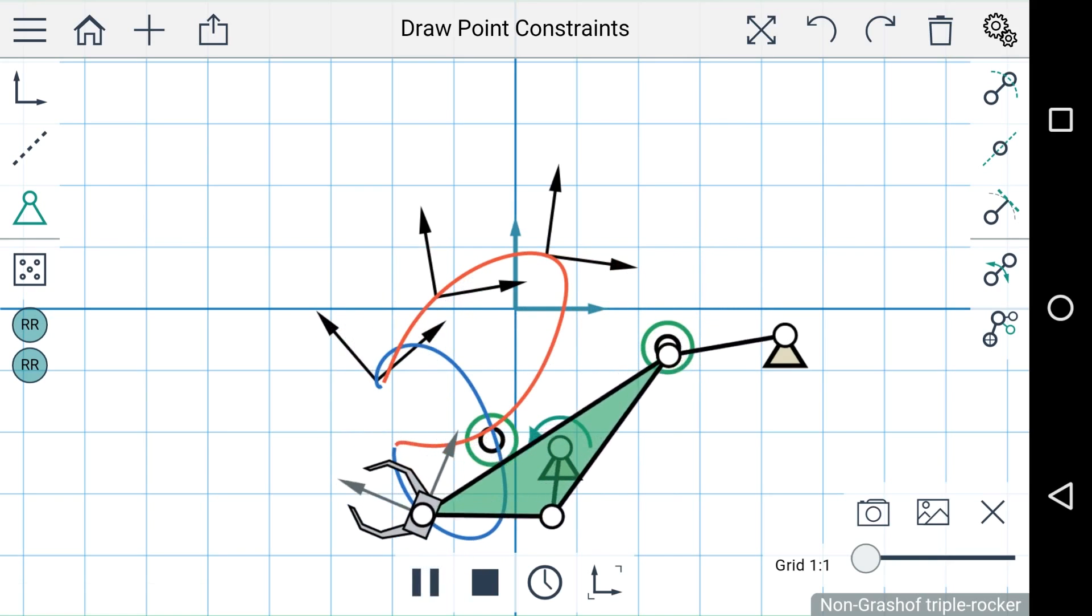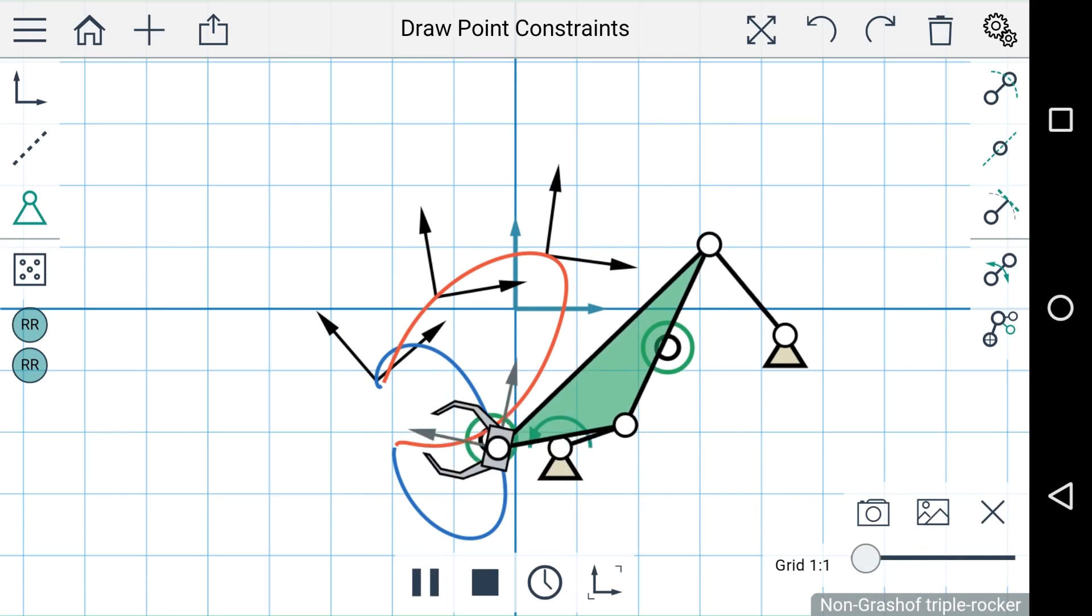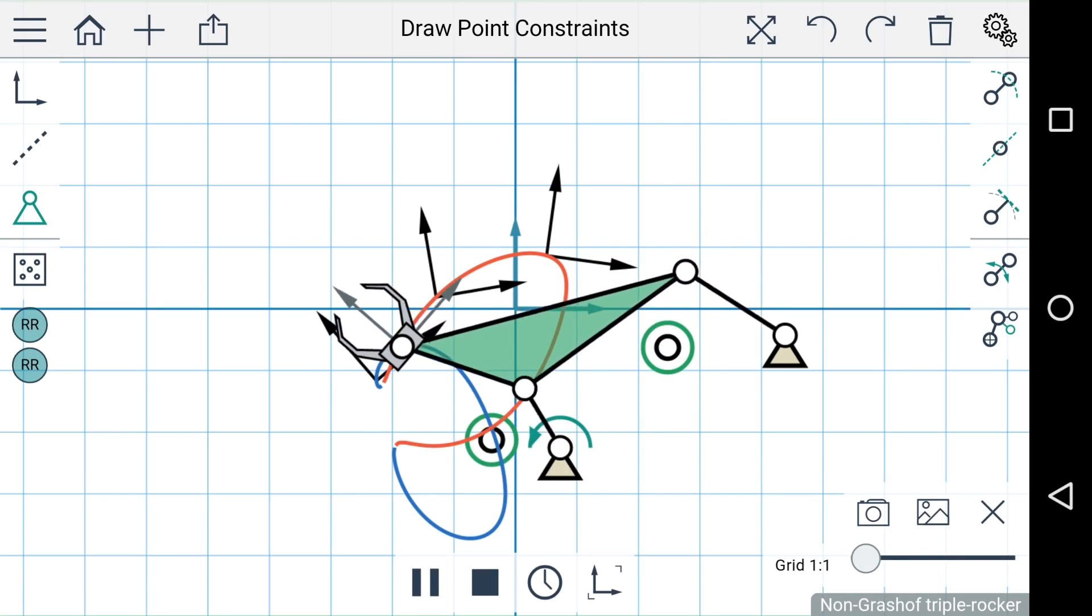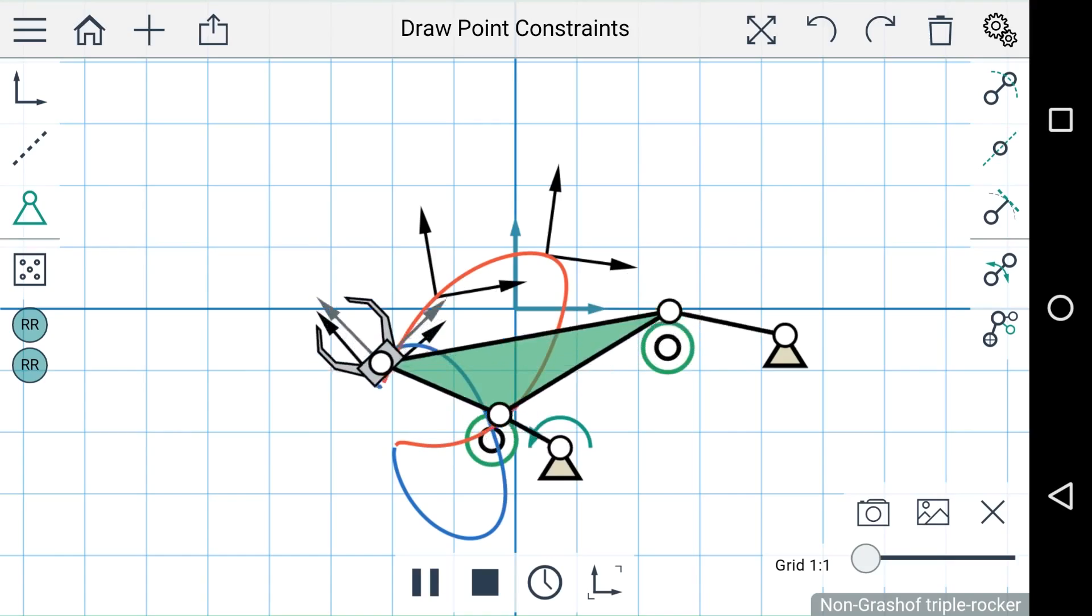So that's how you can synthesize four-bar linkages using three, four, or five positions using MotionGen.